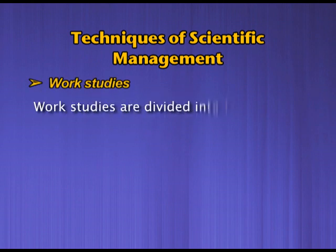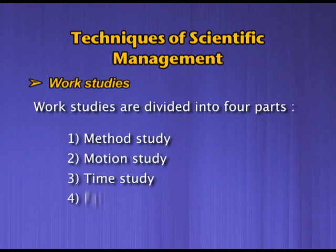The first technique is work studies, which are divided into four parts. The first part is method study. The main aim of method study is to find out the best method of doing the work. A method is considered the best if it reduces the cost of the organization and helps increase profits. Management must observe and analyze all available methods, and adopt the one that is cheapest and best.